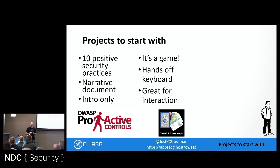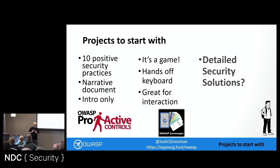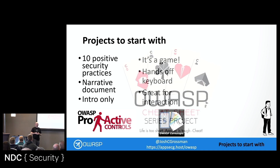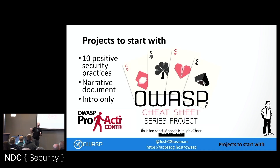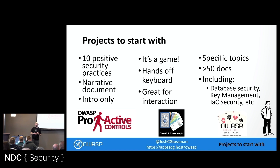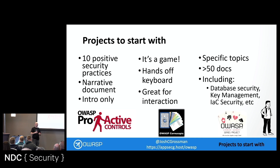What if we need to solve a specific security problem? The OWASP Cheat Sheets project is a set of over 50 different documents that go deep into a particular topic. How do you write secure C# code? How do you work with databases securely? How do you do key management securely? How do you do infrastructure as code securely? These are deep-dive documents to try and help you solve those particular problems.